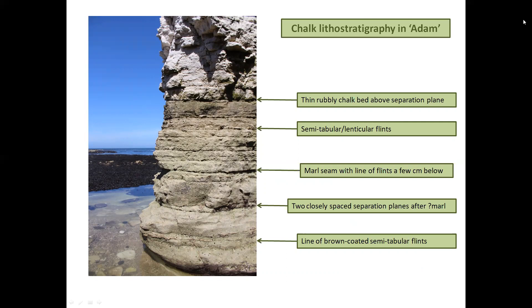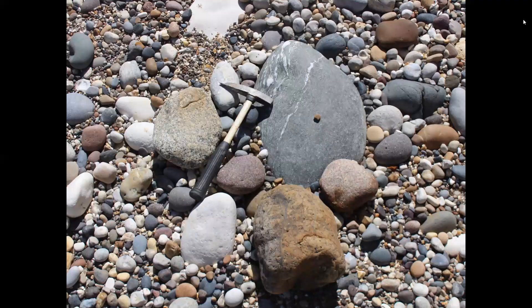Before we leave Monk Hole, let's spend a little time looking at the material that floors it. There's a great variety of rock type, ranging from locally derived chalk and flint to more exotic glacial erratics, including granites, cyanite, dolerite, carboniferous limestones, and middle Jurassic plant-bearing sandstone. Much of this material results from erosion of the glacial till deposits and subsequent sorting by the sea.